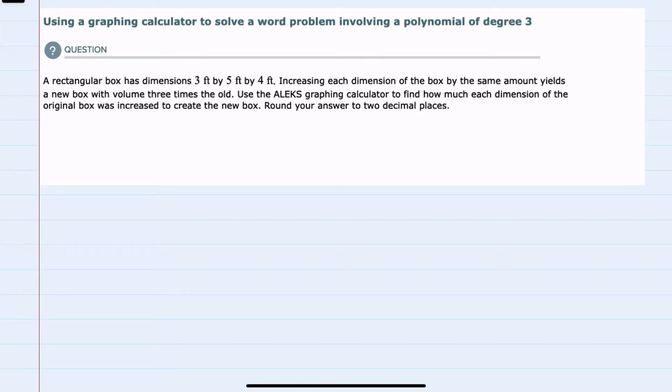In this video, I'll be helping you with the ALEKS problem type called using a graphing calculator to solve a word problem involving a polynomial of degree 3. For this word problem, we're given a rectangular box.